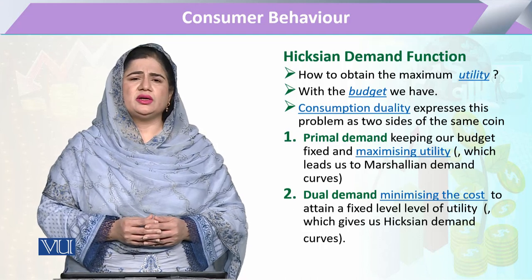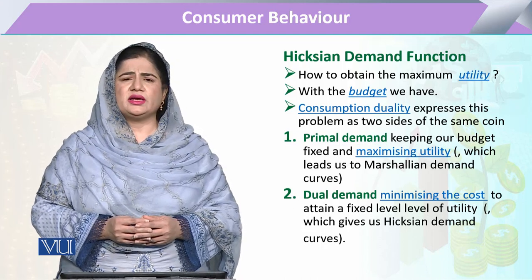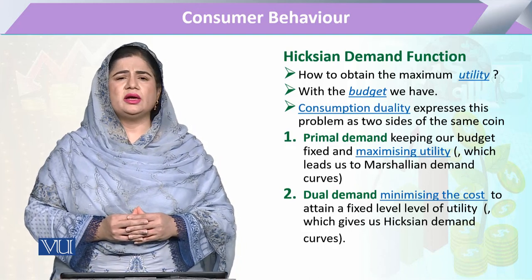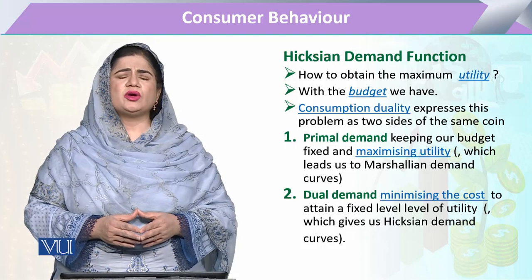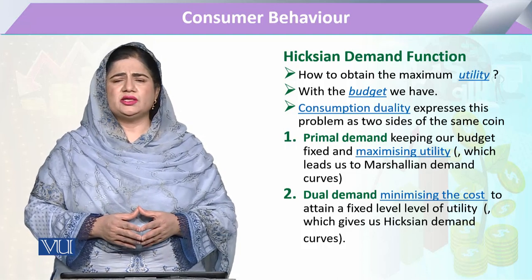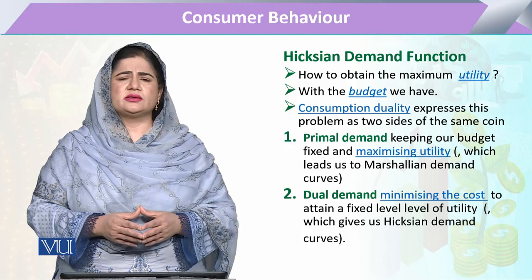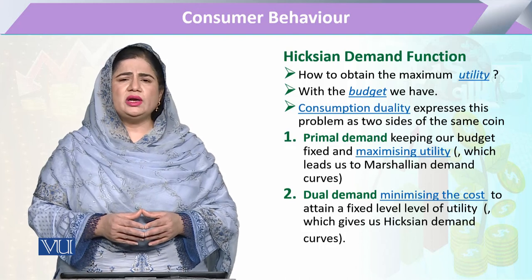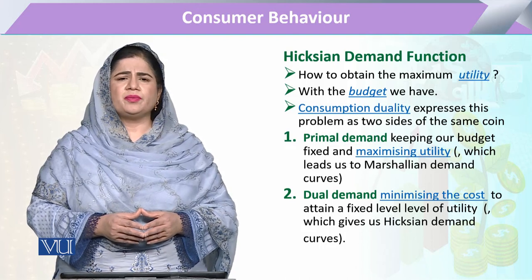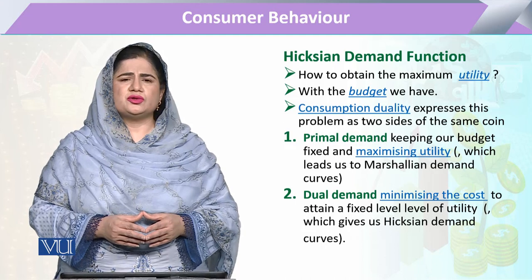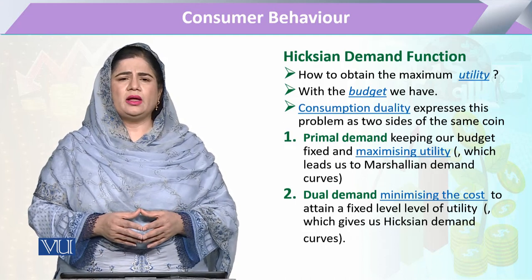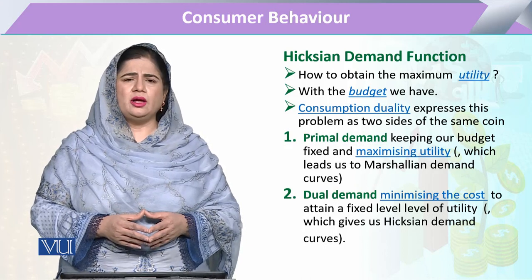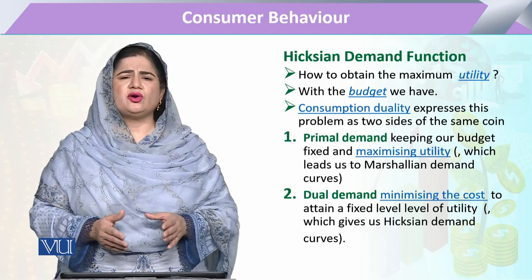The basic question facing the consumer is: what is the level of utility, how to obtain utility, and how to optimize it. When optimization is faced, there is definitely a resource constraint. The problem of utility maximization, keeping in view the resource constraint, is solved in two ways — this is called consumption duality, or the duality principle, meaning each is the mirror image of the other.